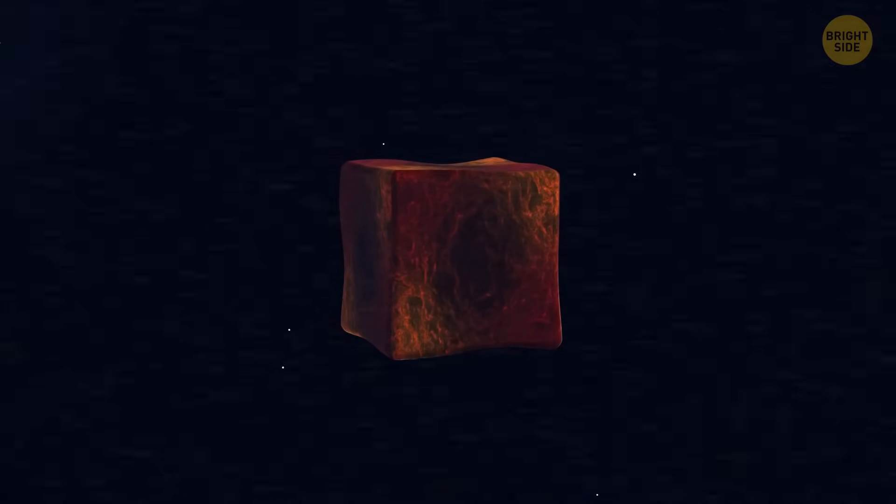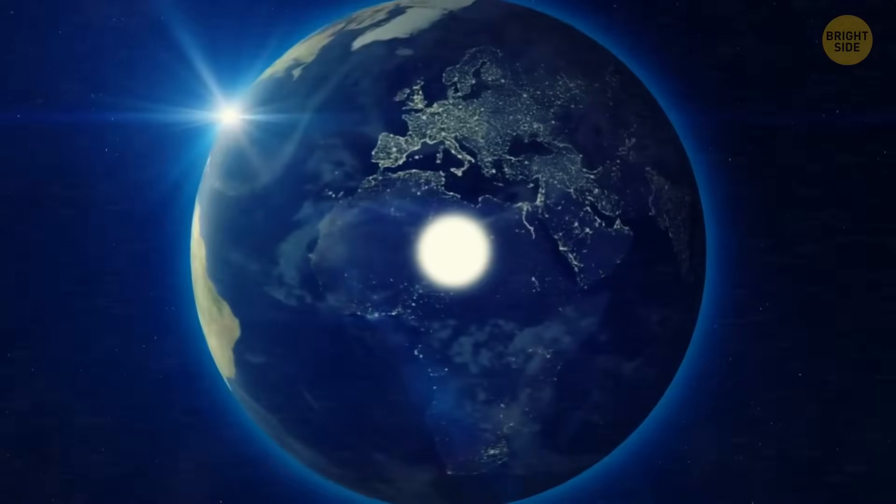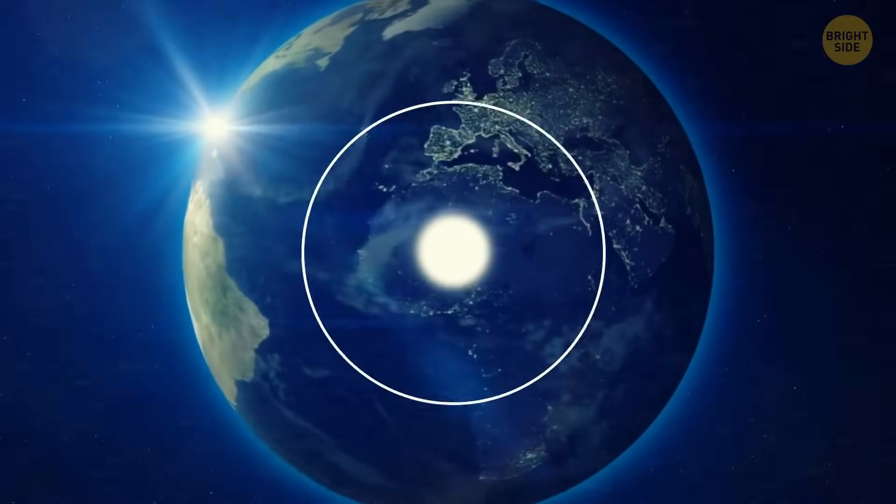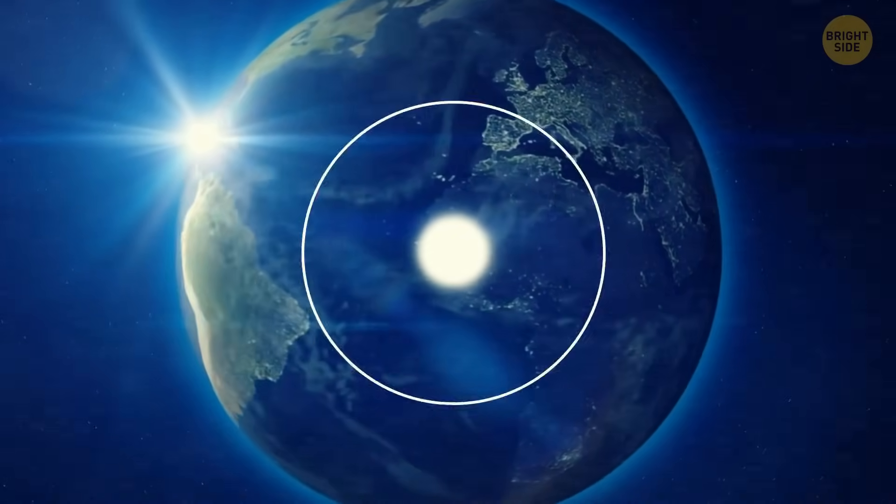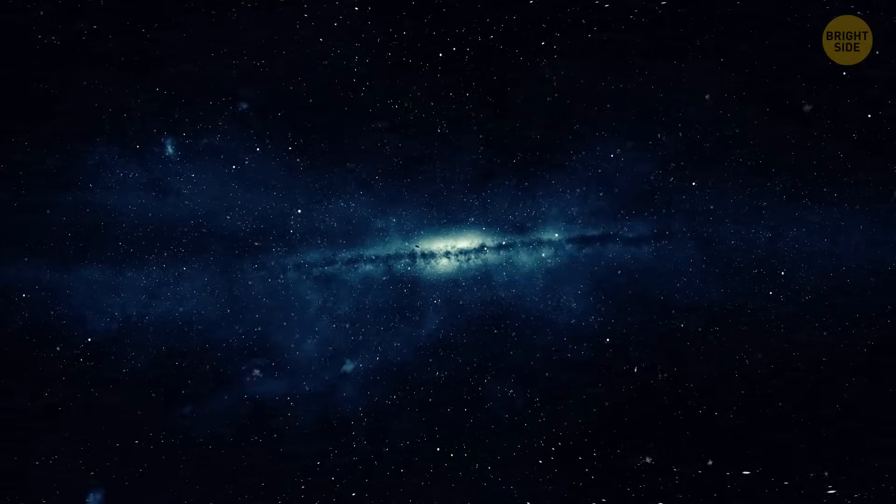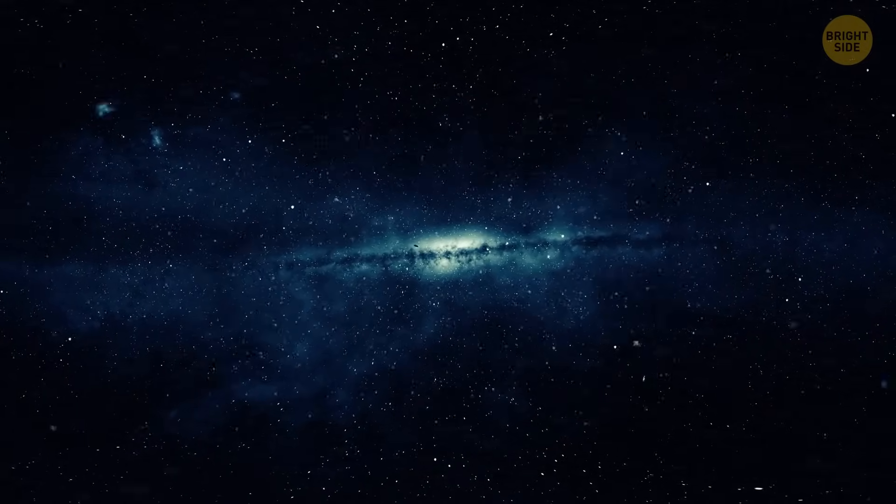A cube-shaped or a triangle-shaped planet would have its mass spread out in a completely different way than a sphere. And you know what that means? Gravity would be all shook up, too. On a spherical planet, gravity pulls everything towards the center because the mass is evenly distributed around that center. But when we introduce a cube-shaped or triangle-shaped planet, things get interesting.